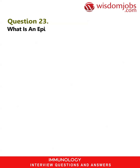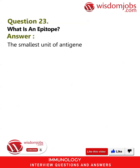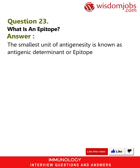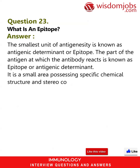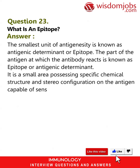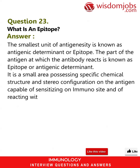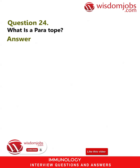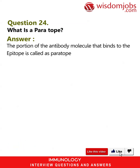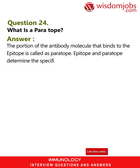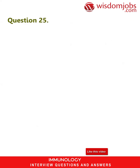Question 23: What is an epitope? Answer: The smallest unit of antigenicity is known as an antigenic determinant or epitope. The part of the antigen at which the antibody reacts is known as an epitope. It is a small area possessing specific chemical structure and stereo-configuration on the antigen, capable of sensitizing an immunosite and reacting with its complementary site on the specific antibody. Question 24: What is a paratope? Answer: The portion of the antibody molecule that binds to the epitope is called a paratope. Epitope and paratope determine the specificity of immunological reactions.